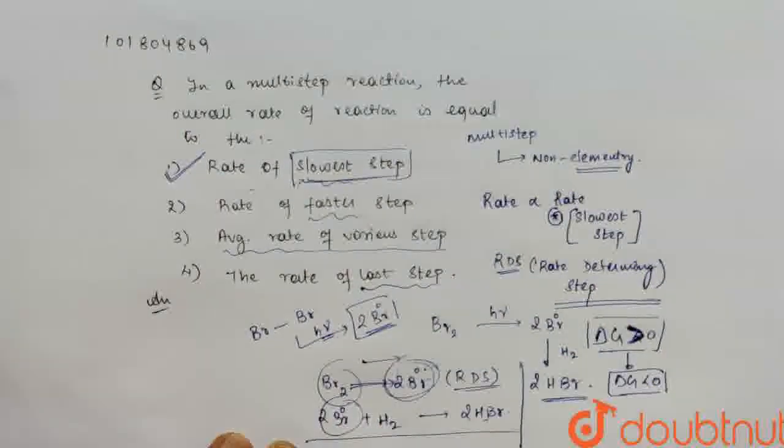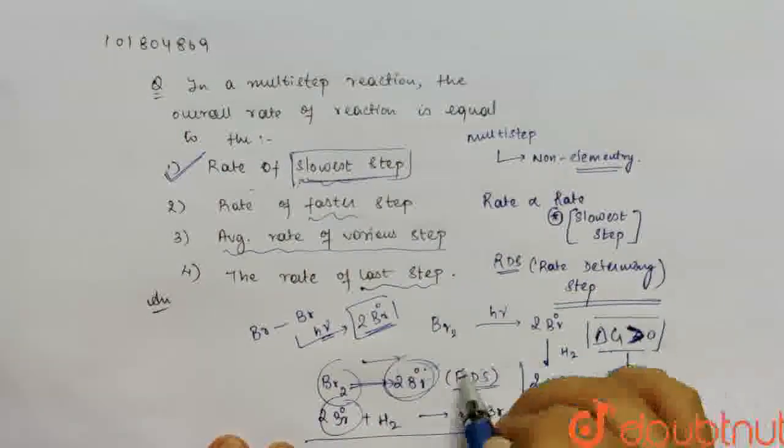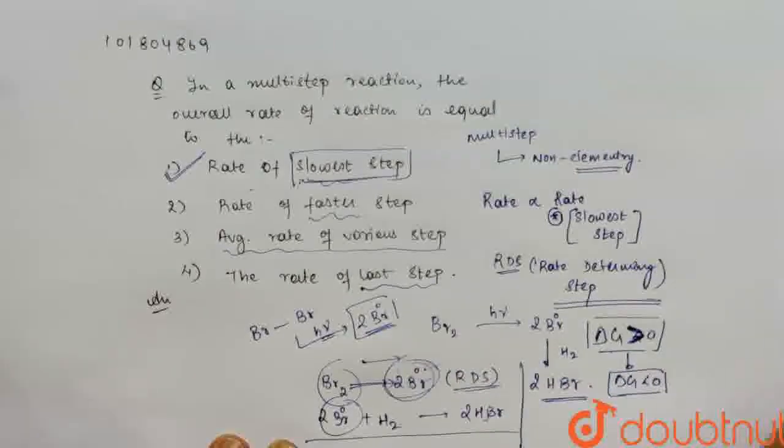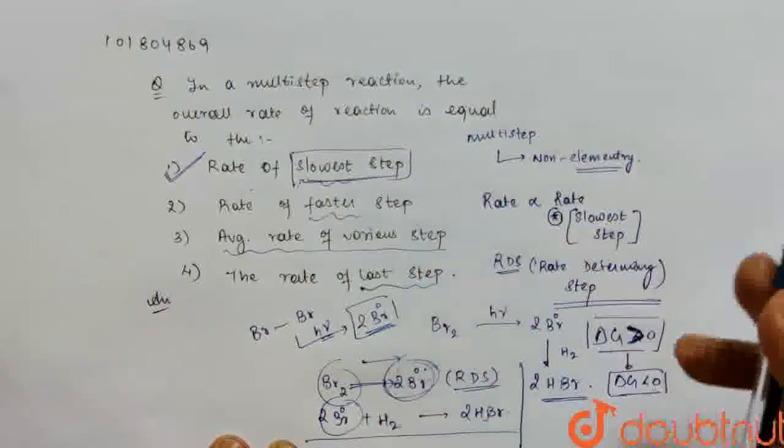So basically, if you give a lot of energy which is in the form of hν, then it will form the 2 BR radicals. So the most energy required means the slowest step. And the slowest step is the RDS step. So basically your slowest step will be the rate determining step and governs the overall rate of reaction.